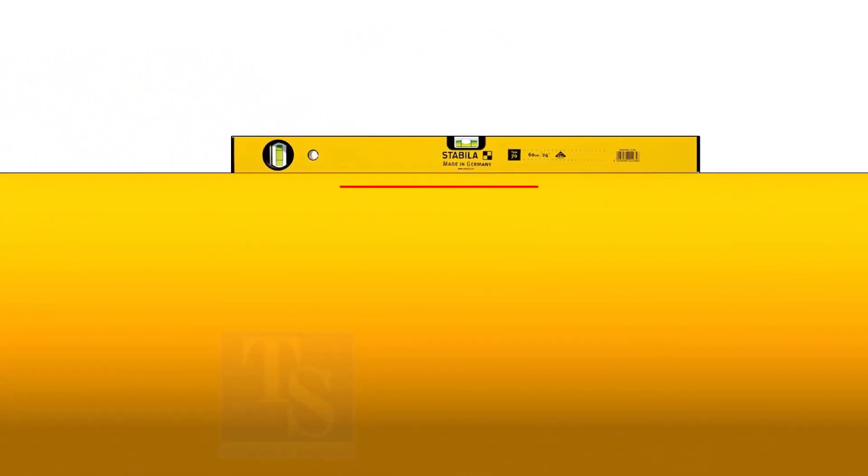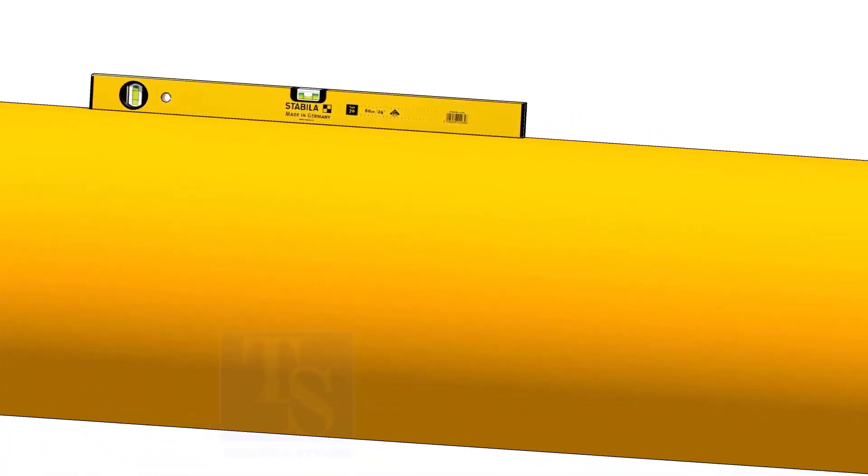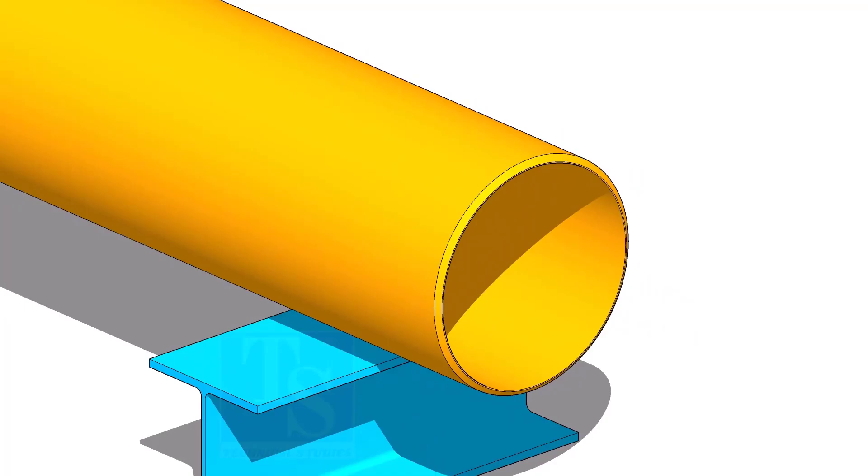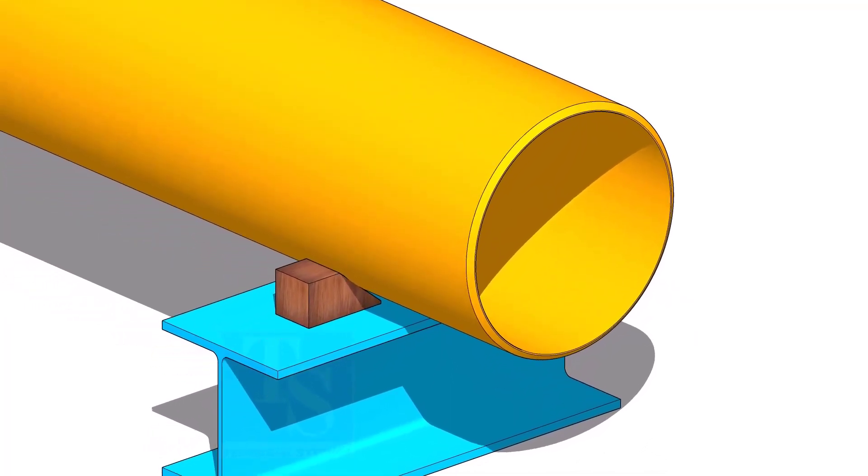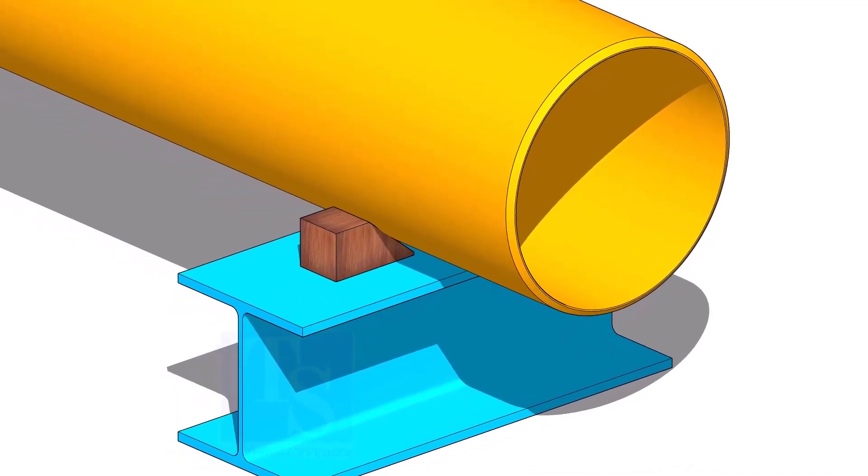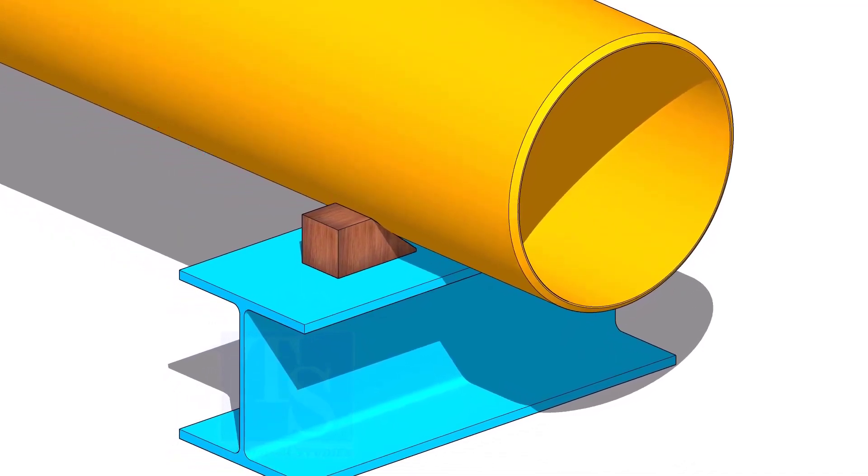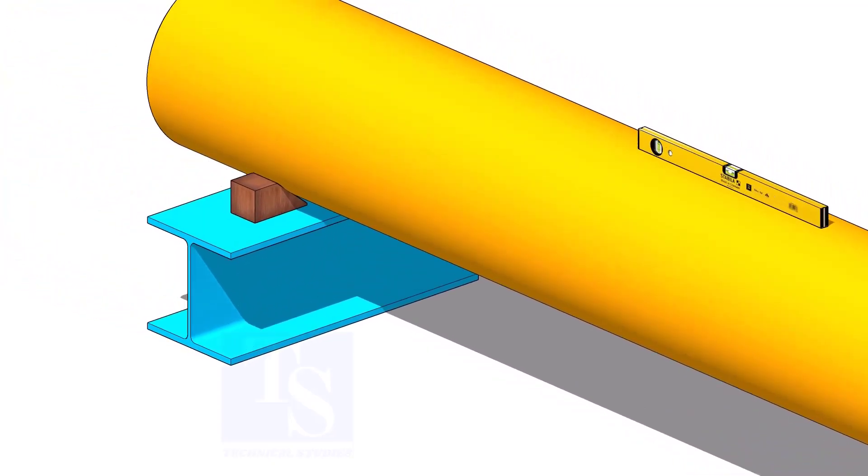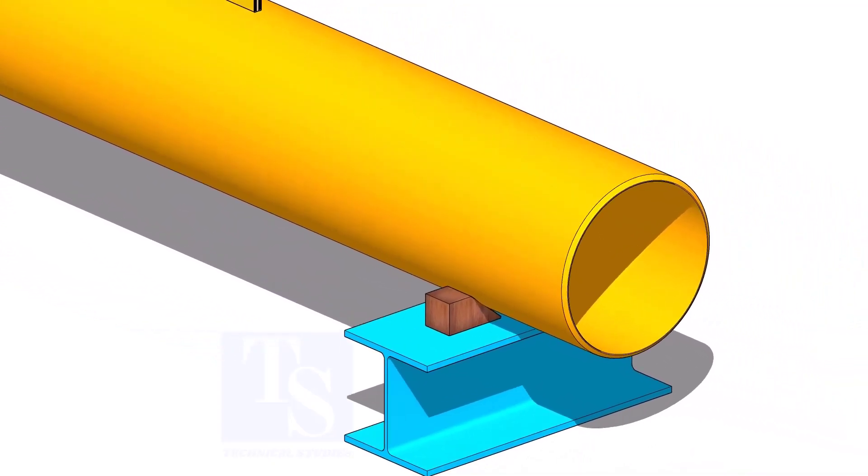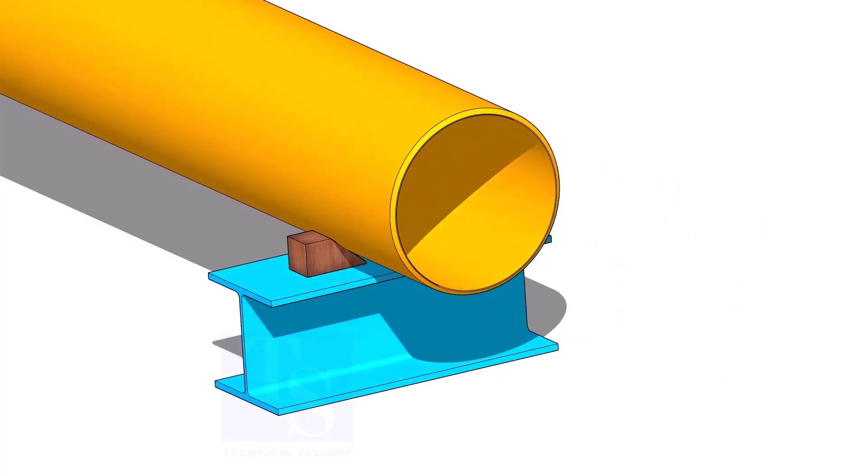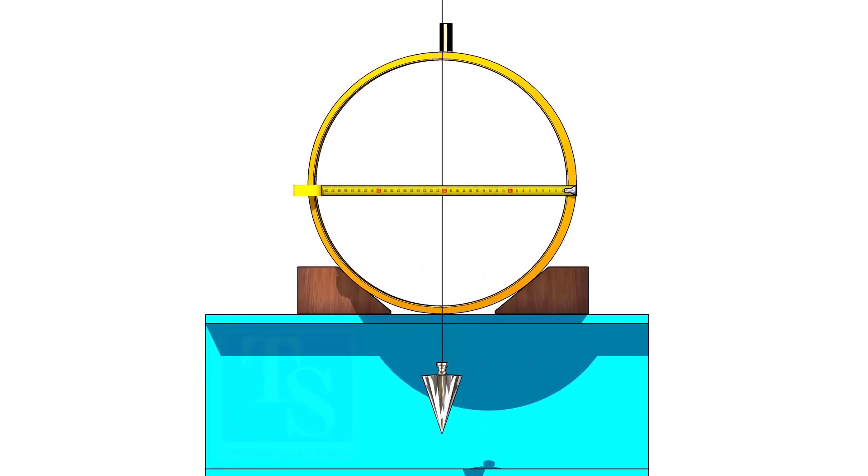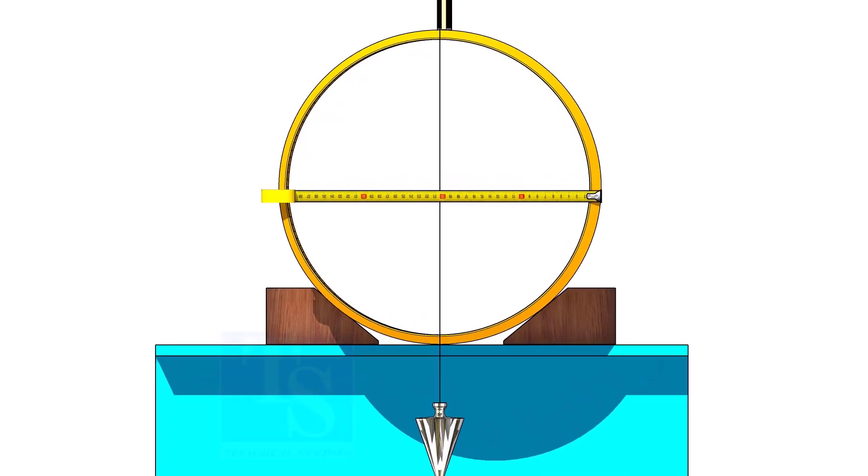Level the pipe and put packing on both sides so that the pipe will not roll. Put a plumb at the center of the pipe. Adjust the plumb to the half diameter of the pipe.